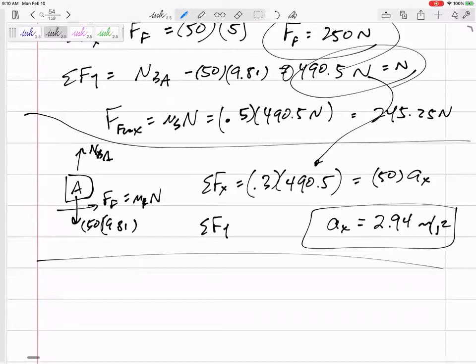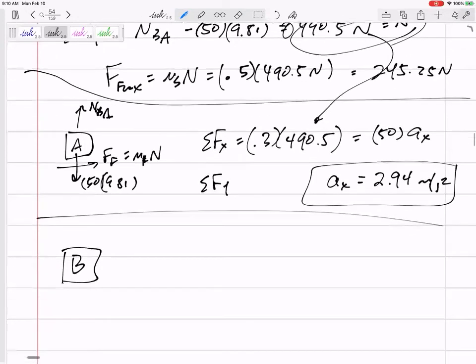And now to get the acceleration of block B, I need to draw a free body diagram of block B, which I haven't done before. All right, let's do this. I like to show this because it's an interesting free body diagram when you have objects on top of each other.